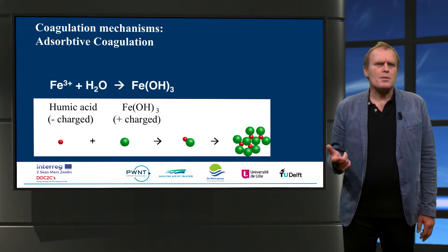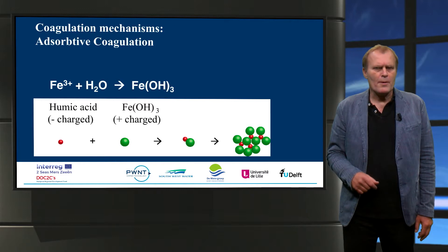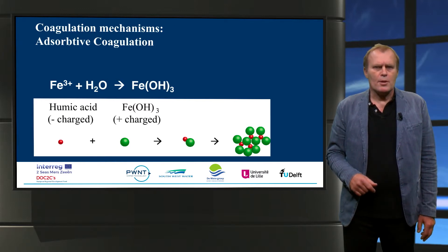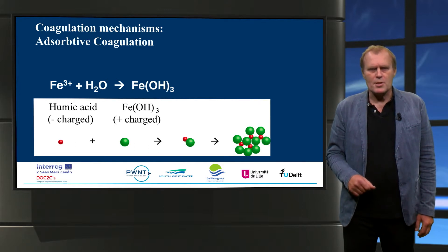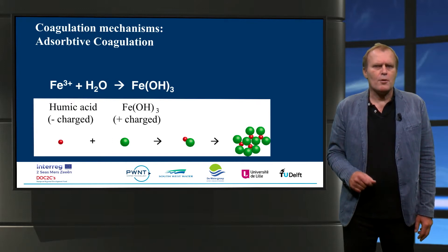The second mechanism is adsorption coagulation. This is the most important mechanism for NOM removal. The natural organic matter — for instance humic acids — adsorbs on the positively charged iron particles. During flocculation, bigger flocs are formed.